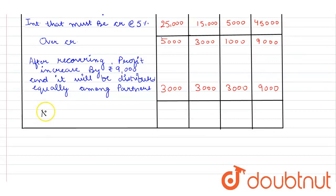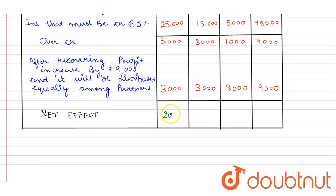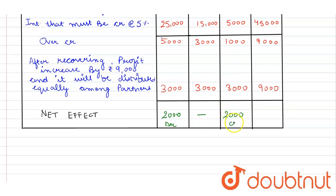Net effect: X has an excess of rupees 2,000, so it will be debit. Y has no excess — no effect. Z has rupees 2,000 and it will be credited.